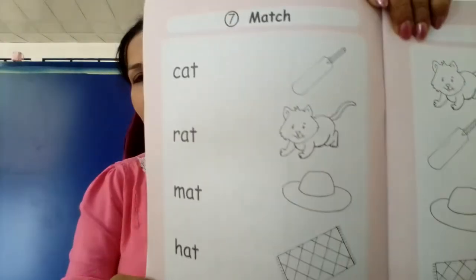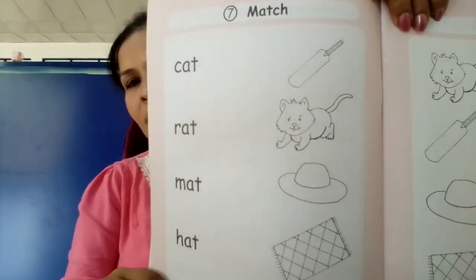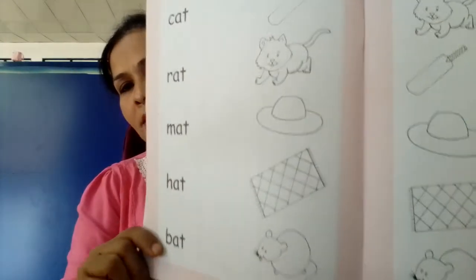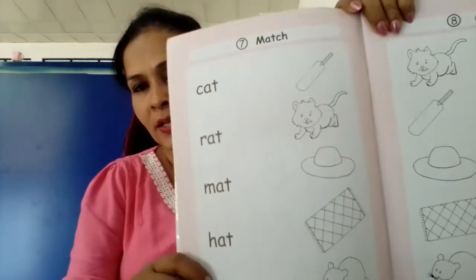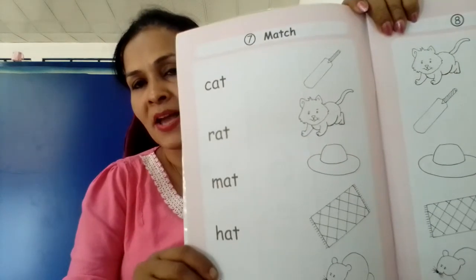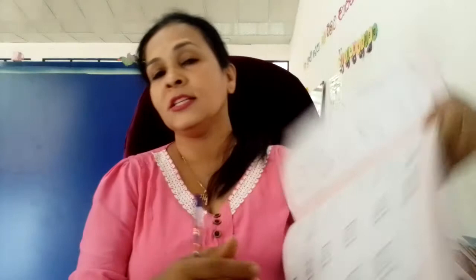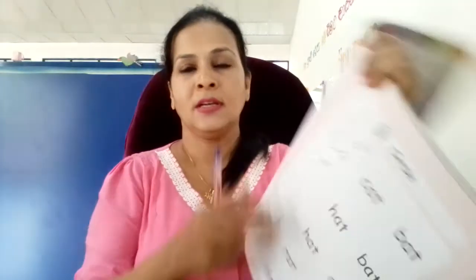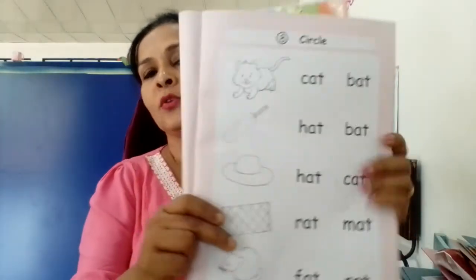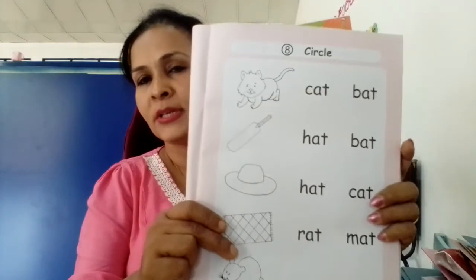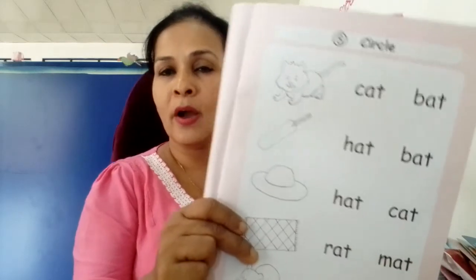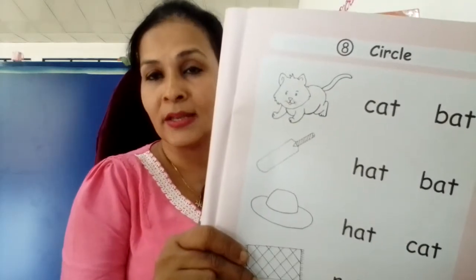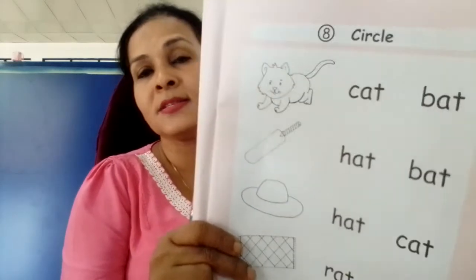See, only three-letter words are there: bat, cat, hat, mat, rat. You have to find and match, and after that color these pictures. Here in this page there are two words in front of each picture. You have to select which one is the correct word and circle it.